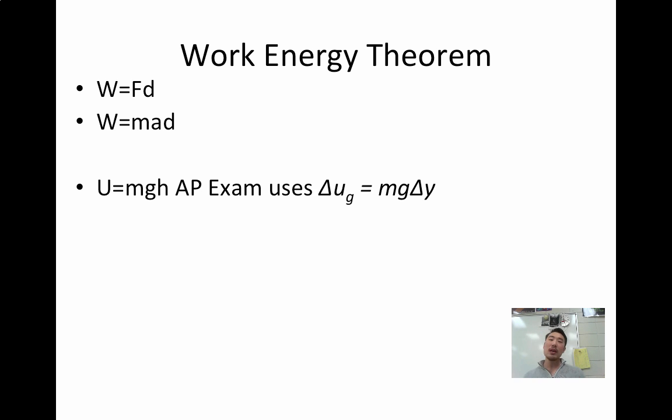That's the simple way of remembering it. The AP exam formula sheet will give it to you like this. It's the difference between the potential energy. So it requires two things, a starting point and an ending point. And it requires a mass, the gravitational acceleration, and a change in height. So that's just a fancier way of saying mass, gravity, height.